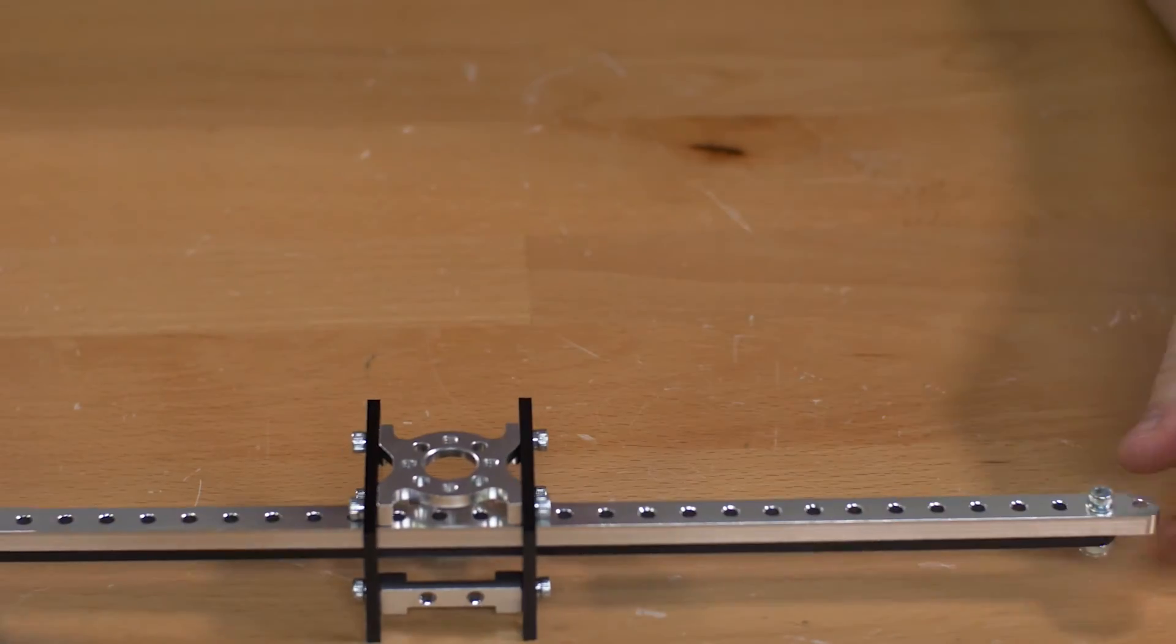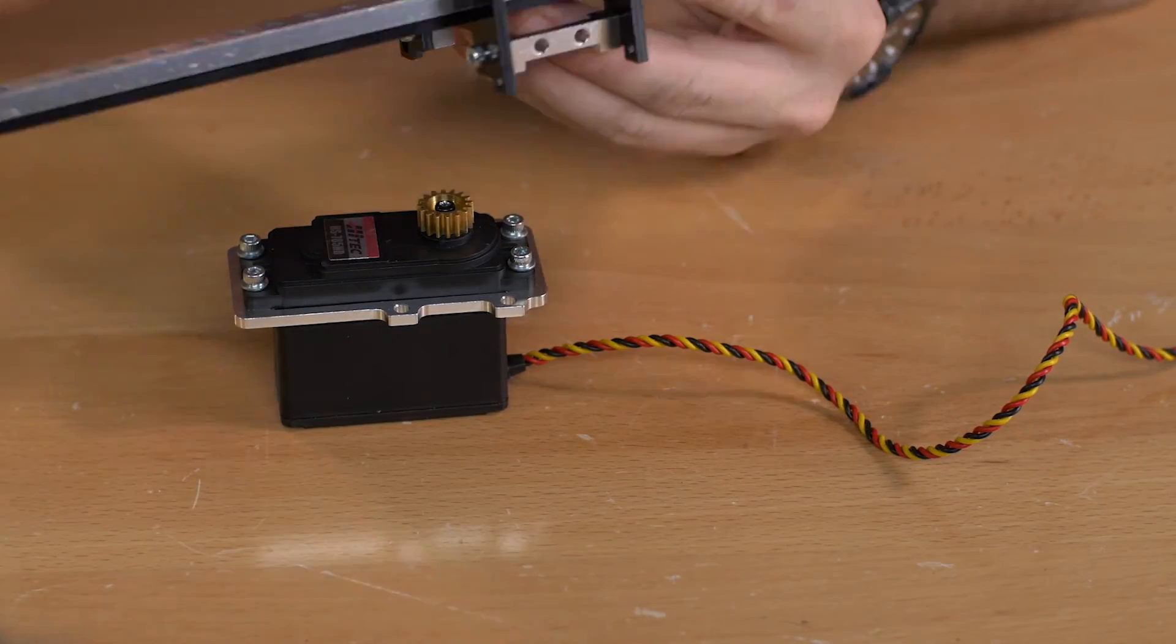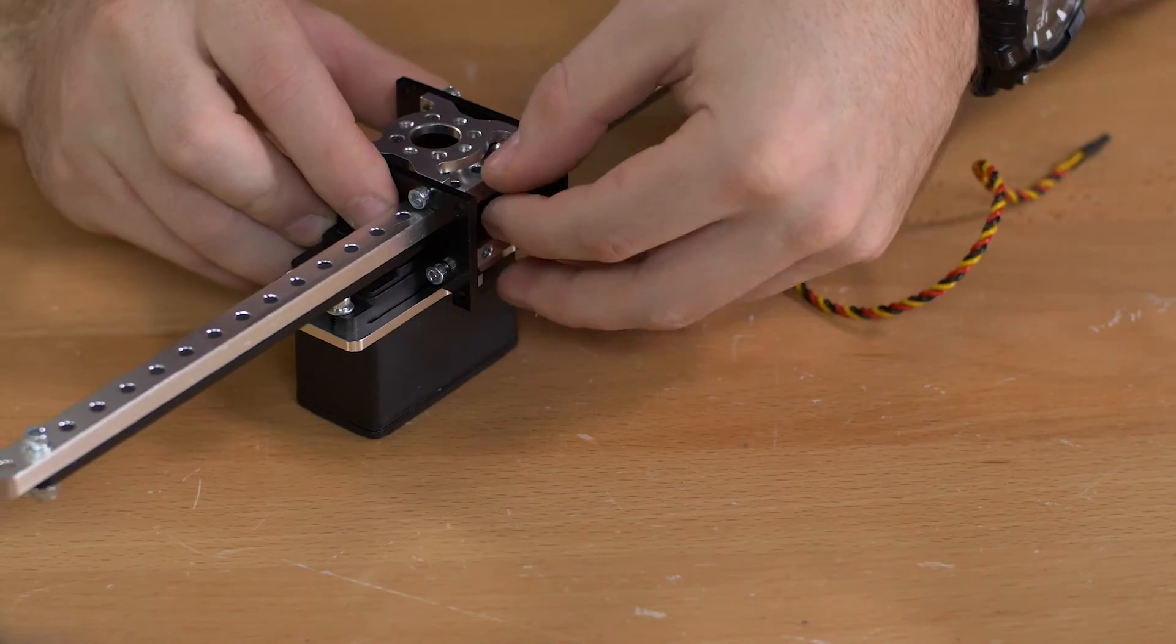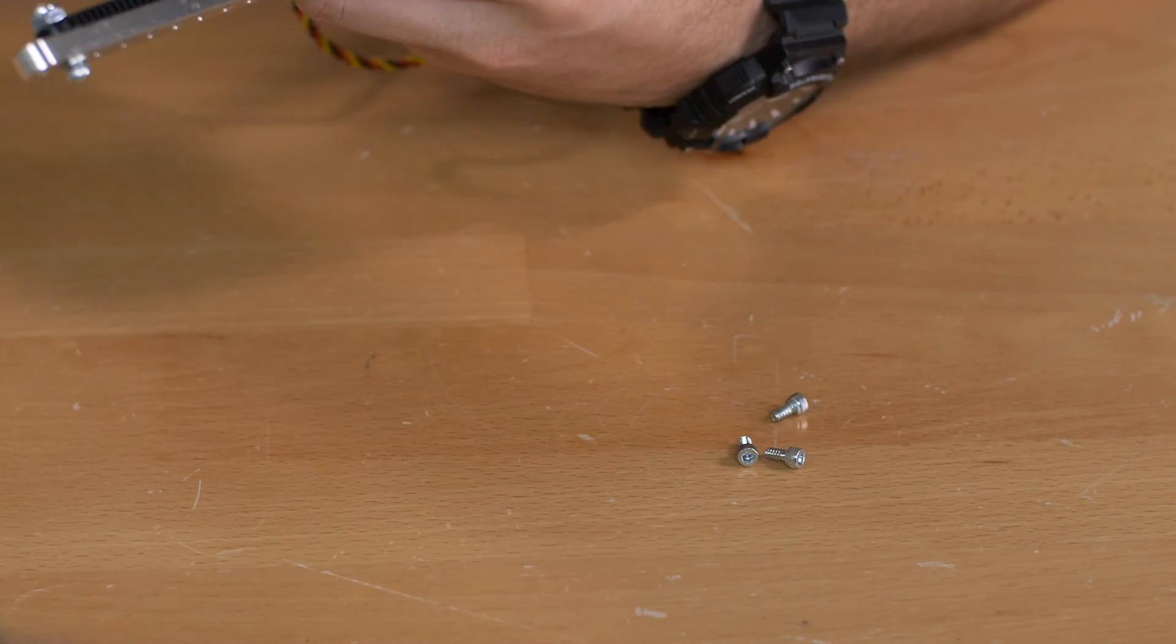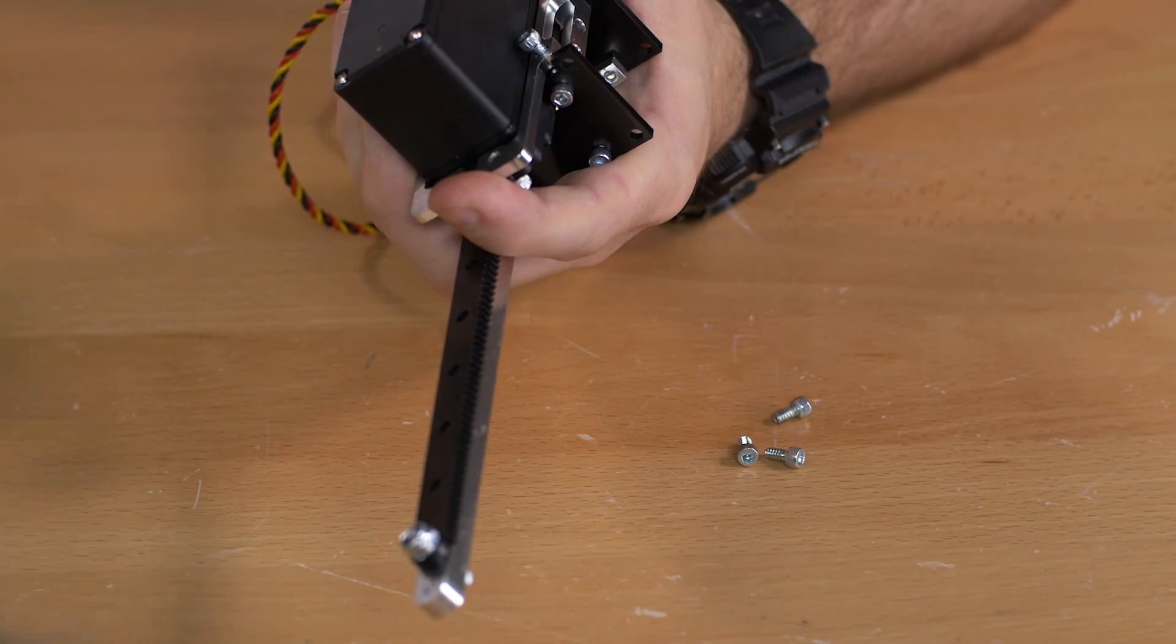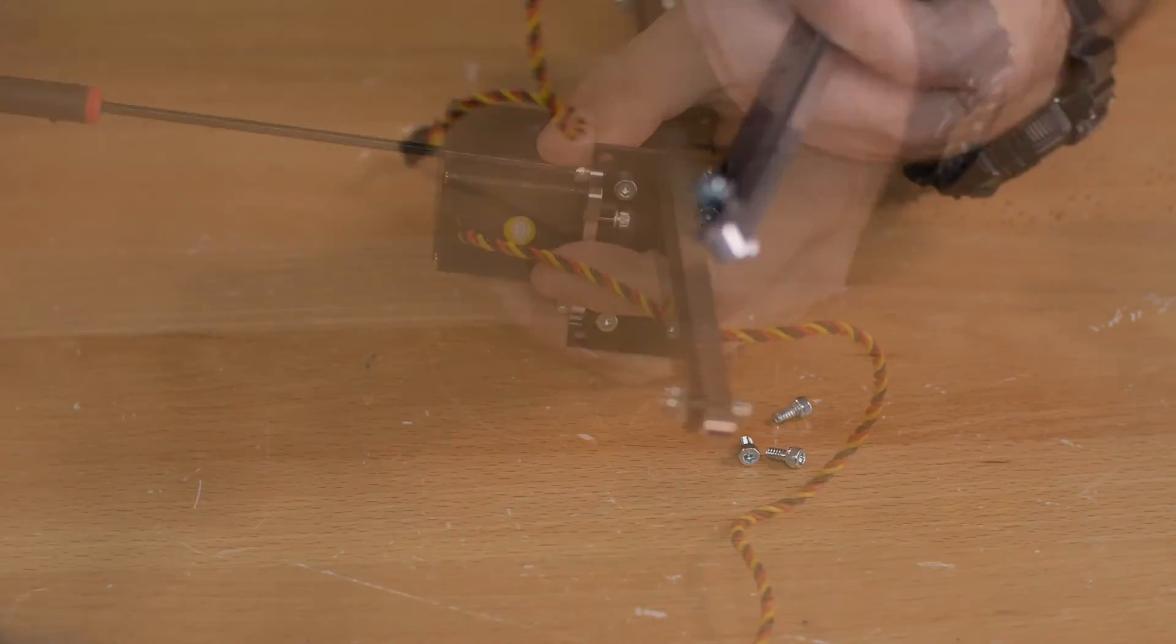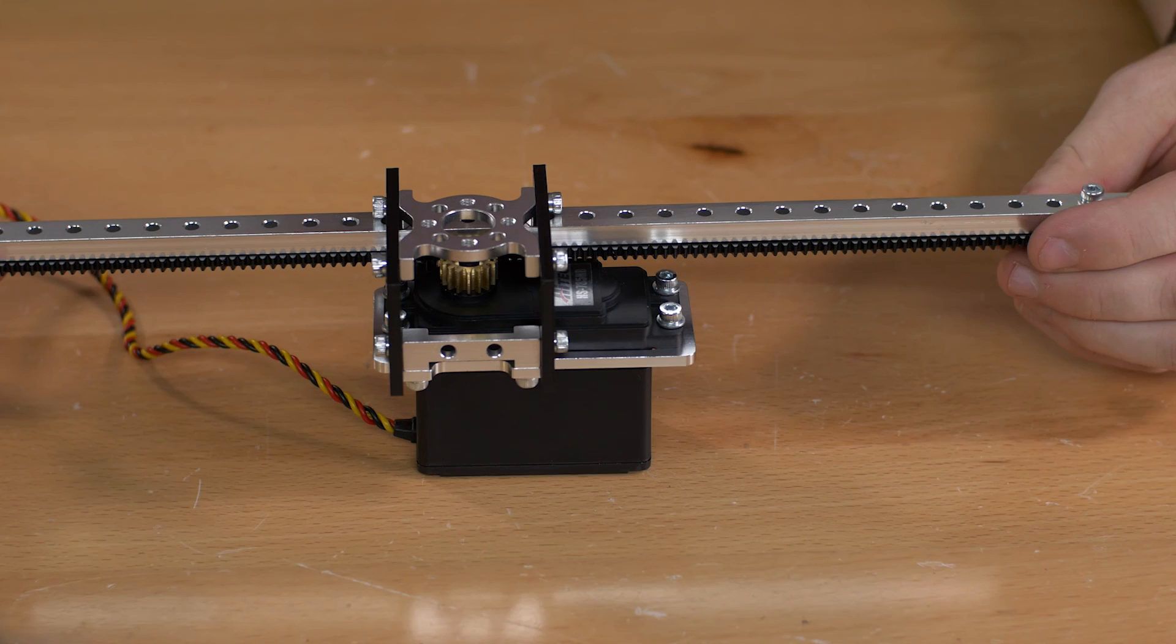Finally what we'll do is grab our servo and this will slide right over the top, and we're going to use again the quarter inch socket head screws to fasten that in place. And that's all there is to it.